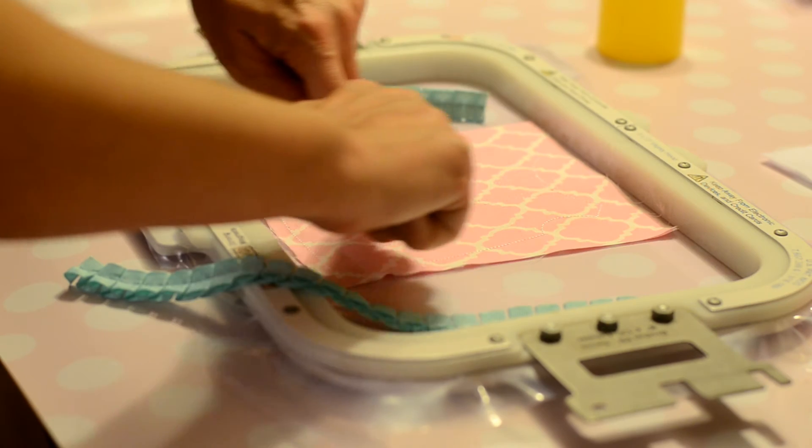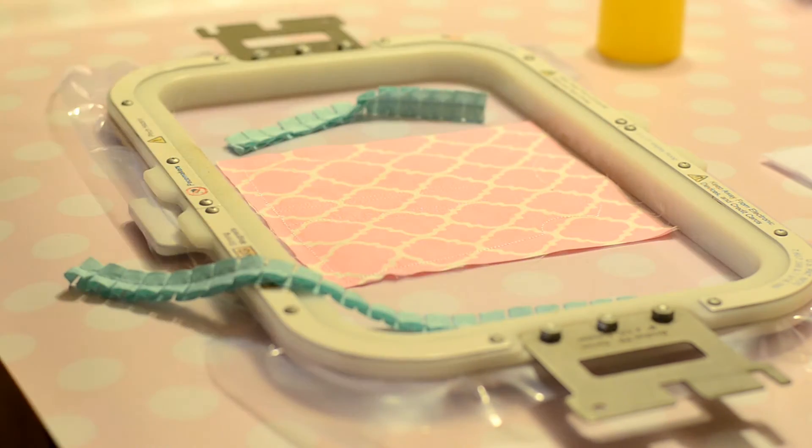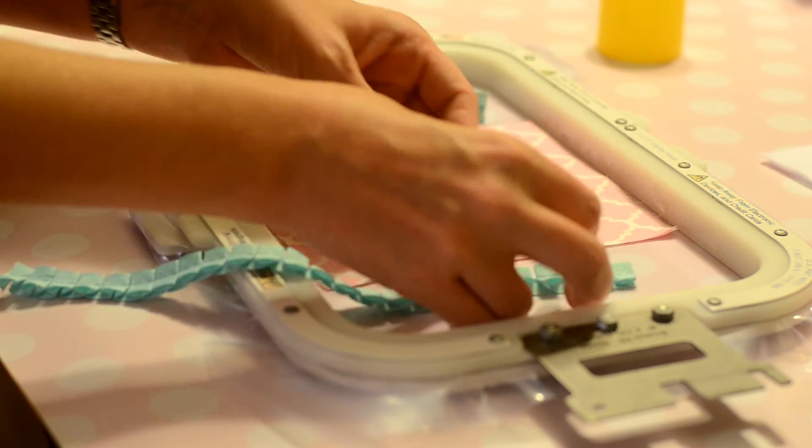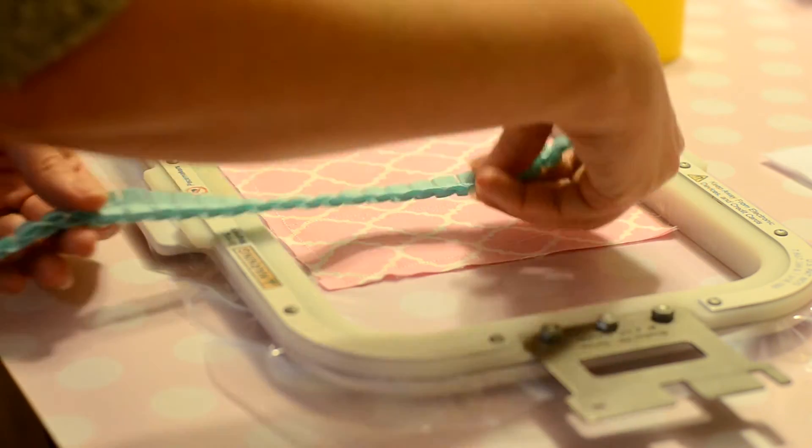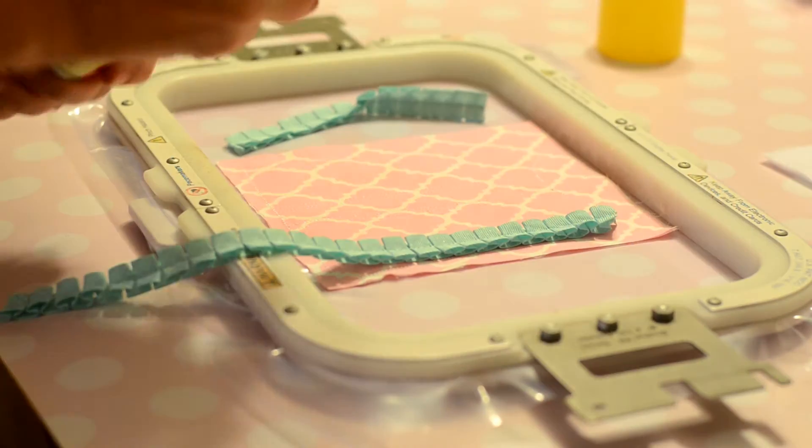Use temporary spray adhesive to secure the lace or the ruffles on each side of the vertical guidelines and then cover all of this with felt. This trim is from Walmart.